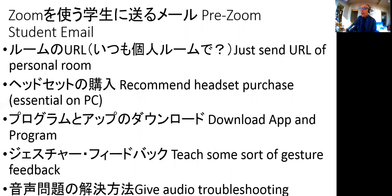I send a pre-Zoom student email containing the URL of my meeting and I always just use the personal room URL. Be careful because there's a personal room URL and a personal meeting URL — they're very similarly named but one is a personal room and the other is a personal meeting. I just always use the same one because as you'll see it doesn't make a lot of difference when you're using the free plan.